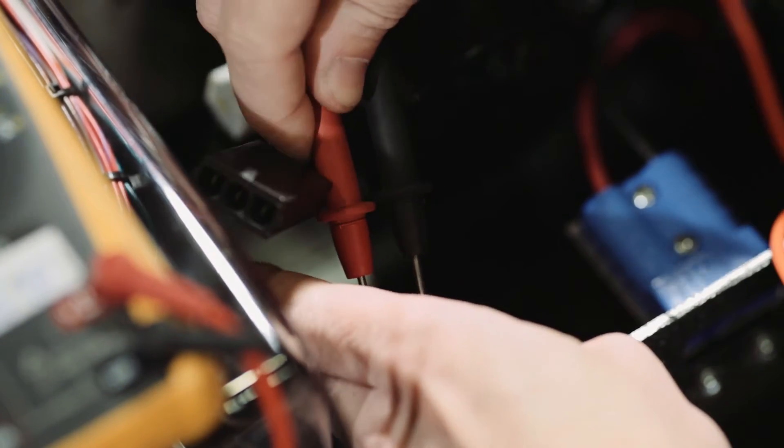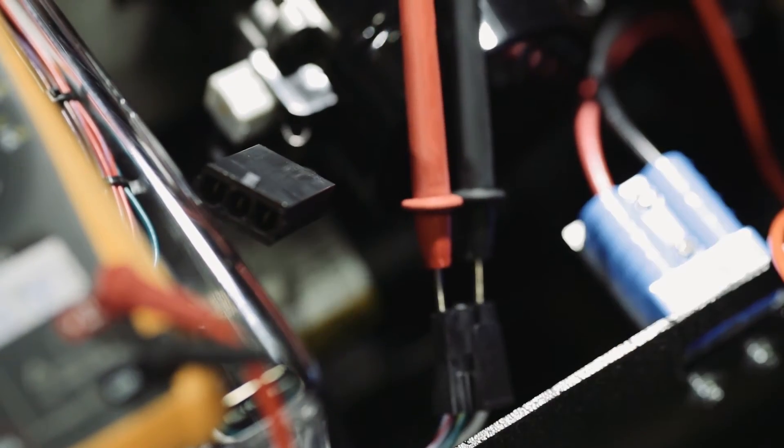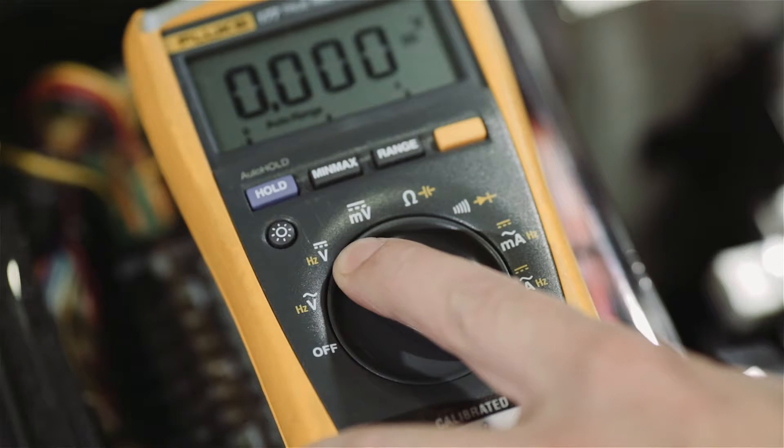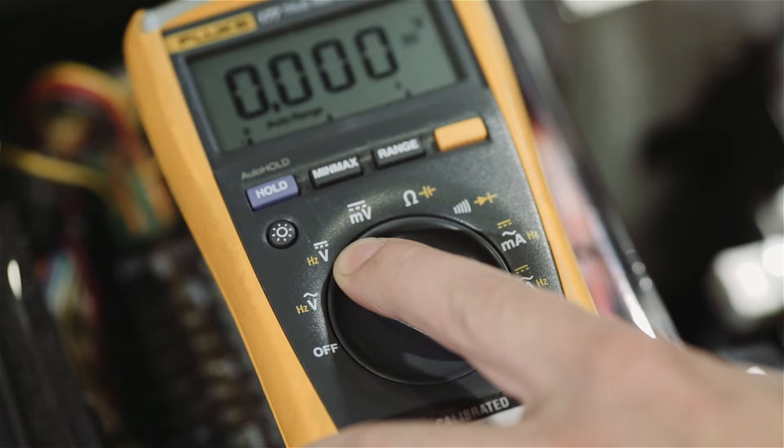We want to make sure we set our voltmeter to DC voltage. The DC voltage will be a straight line with dots underneath of it and a large V below that.